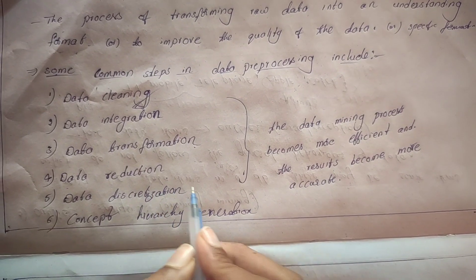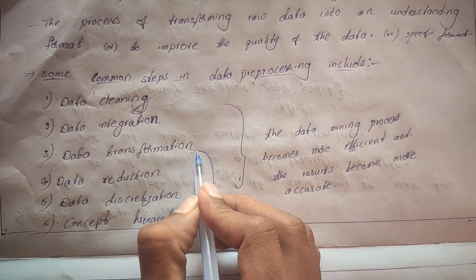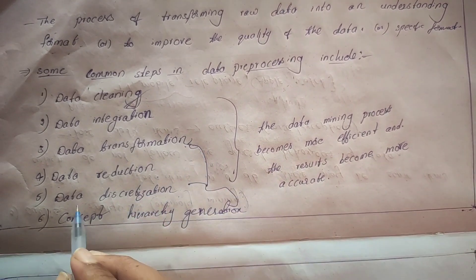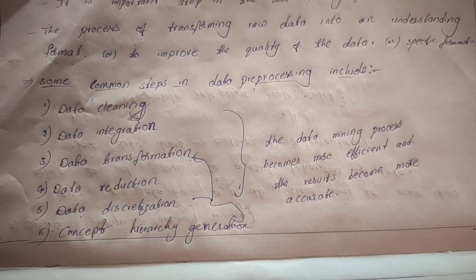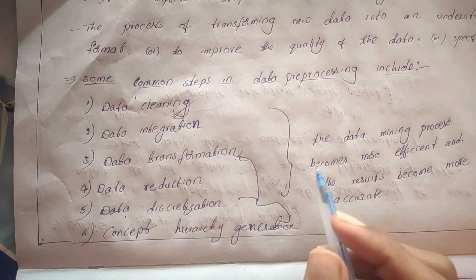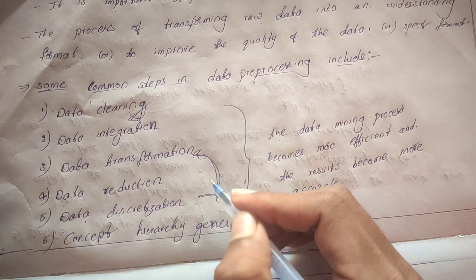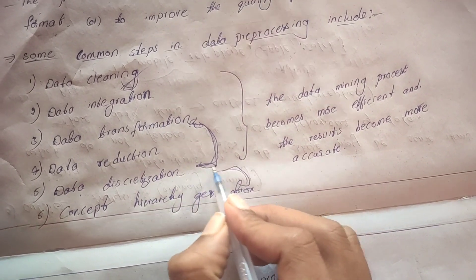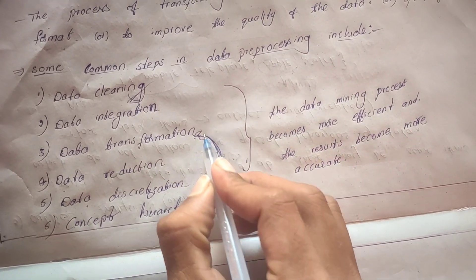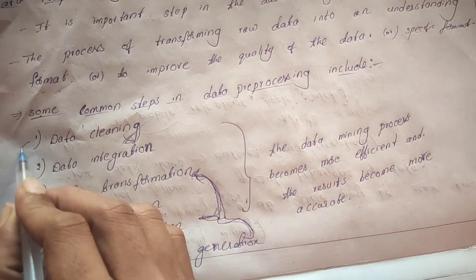Data discretization and concept hierarchy generation also come under data transformation. Data discretization means raw values are converted into interval values — a transformation is applied. Concept hierarchy generation means attributes are converted from low level to high level.